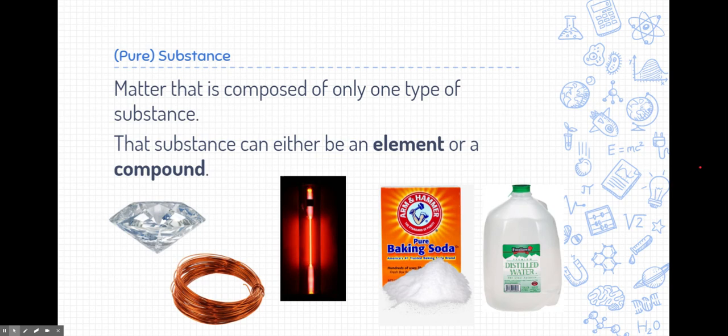That substance can either be an element or a compound, and these are things that we've been learning for a while. So things like diamonds or copper wire or tubes filled with noble gases or baking soda, which is sodium bicarbonate, or distilled water, which is just water. All of these are examples of pure substances because they're purely made of one type of thing.